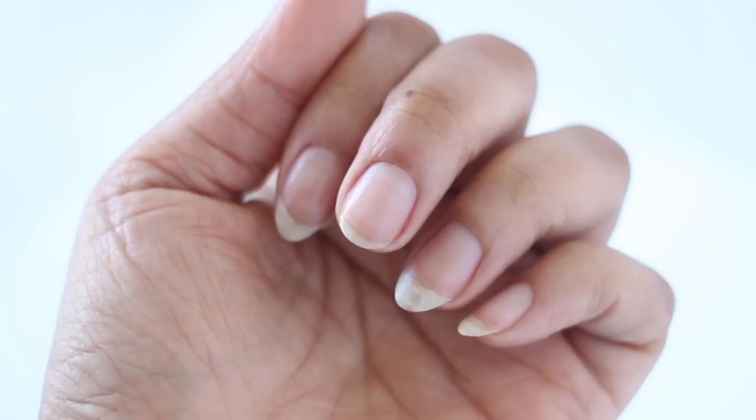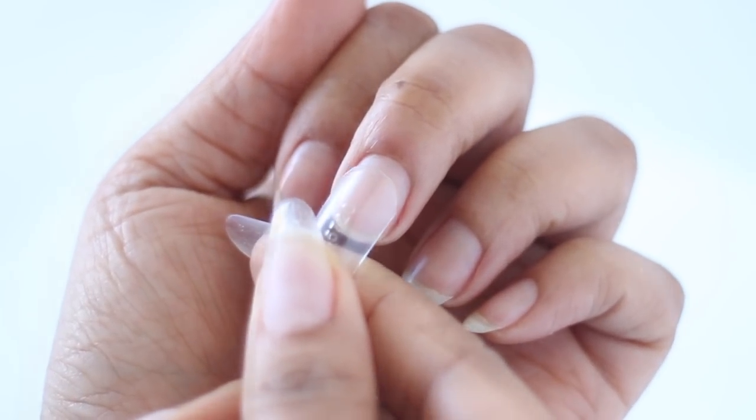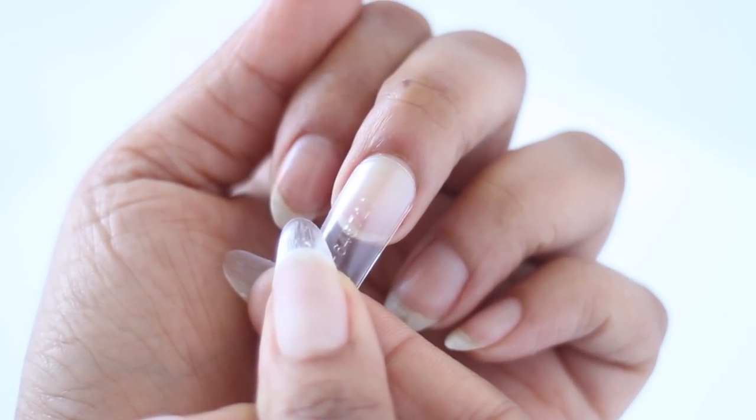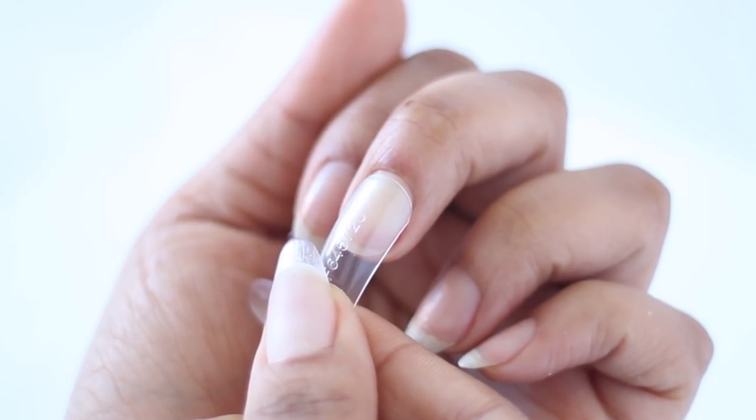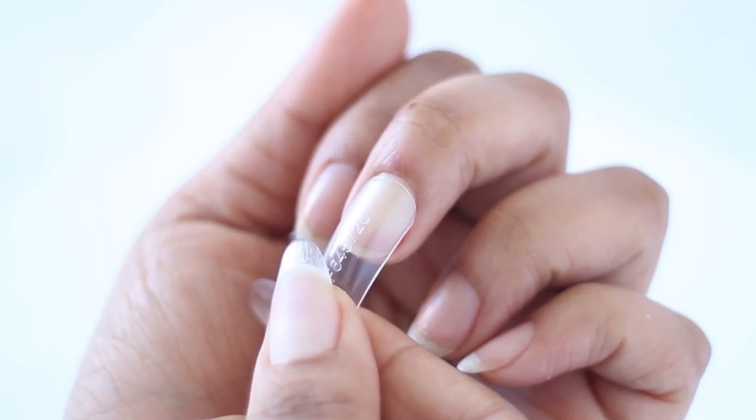The first thing you want to do is fit your nail forms. So go through each finger, pop one on that fits, and you'll know it fits because it will align around the cuticle but also reach your sidewalls.